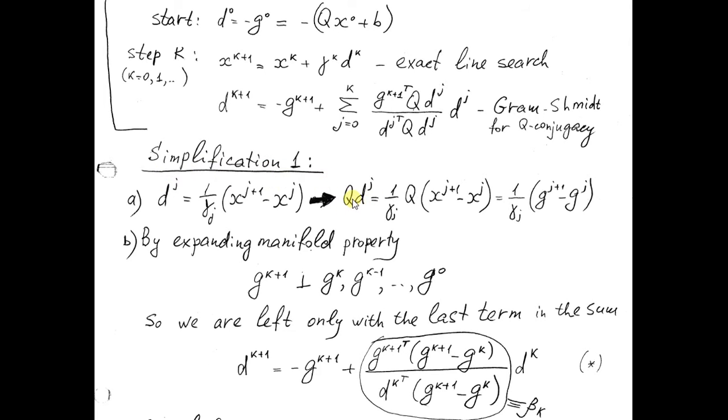So in this way the term q dj become just 1 over gamma j q by difference of axis. Taking into account expression for gradients, we can conclude that q by difference of axis is just difference of corresponding gradients. So we get q dj just 1 over gamma j difference of gradients.